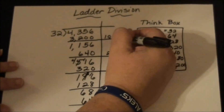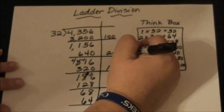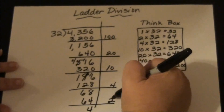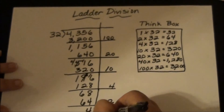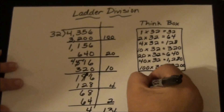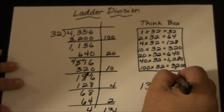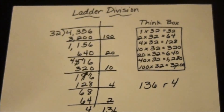Now I add up all the factors: 100, 20, 10, 4, 2 — that's 136. So the answer is 136 remainder 4. And that's how you do ladder division.